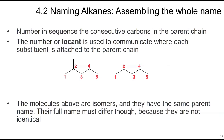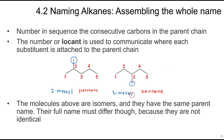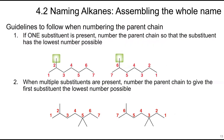When naming compounds, number the consecutive carbons in the parent chain sequentially. The locant communicates where each substituent is attached. Think of the parent chain name as the street name and the number as the address — so '2-methyl' means a one-carbon group at carbon two. If one substituent is present, number the chain so it gets the lowest number possible. For example, a substituent at position two is correct versus position six.